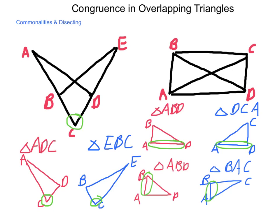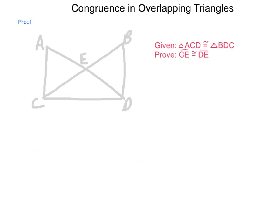Let me show you what I mean. Given this figure, and knowing that triangles ACD and BDC are congruent, we need to prove that line segment CE and line segment DE are congruent. So let's pull out our pieces.